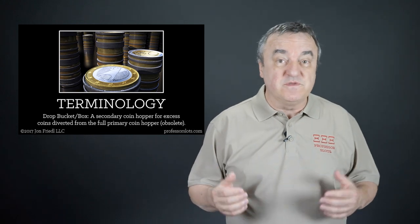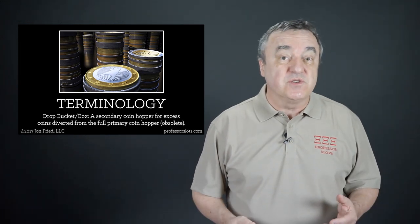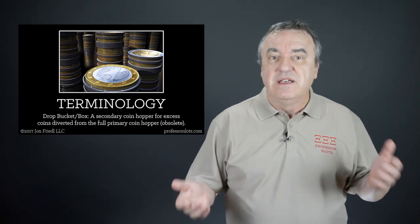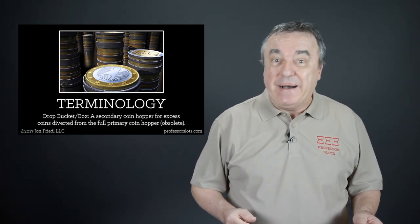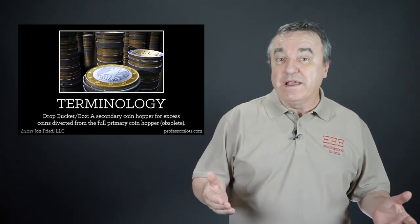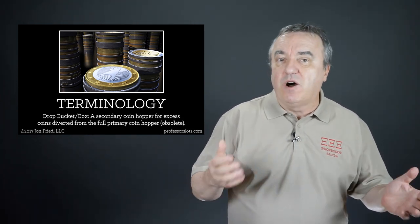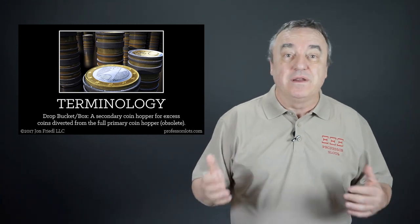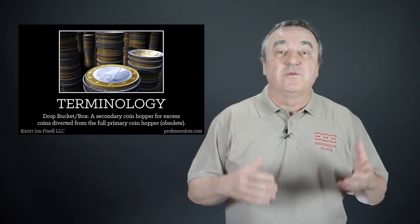There are several obsolete terms for physical components of slot machines of historical importance, even if it is relatively recent history. To continue developing an understanding of the technological advancements related to slot machines, these recently obsolete definitions include: drop bucket/box. For slot machines that still use coins, this is a secondary coin hopper for excess coins diverted from the full primary coin hopper. Whether the slot machine has a larger bucket or a small box depends on the denomination — small denominations, such as a penny machine, require an open large bucket, while larger denominations, such as a dollar machine, might use a small box with a lockable lid.